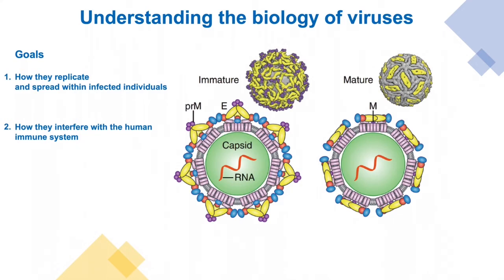Our main goals are twofold. One is to understand how they replicate once they infect an individual and how they spread within the infected individual. The second is to understand how they interfere with the host immune system, because most of the time the severity of the disease arises out of aberrant immune responses.